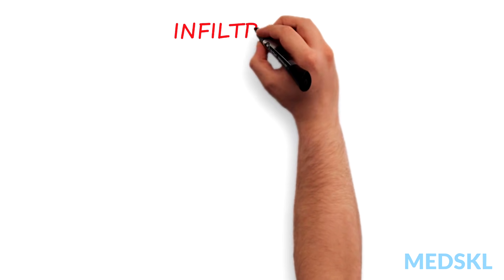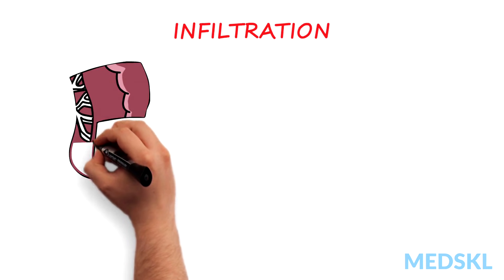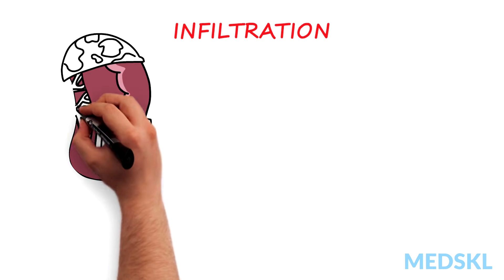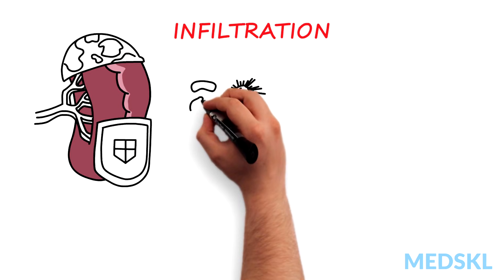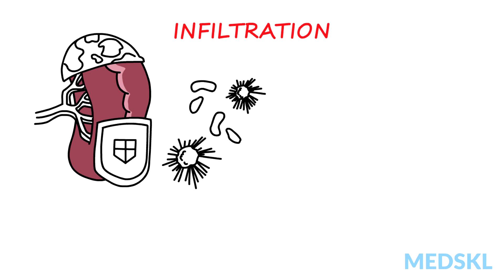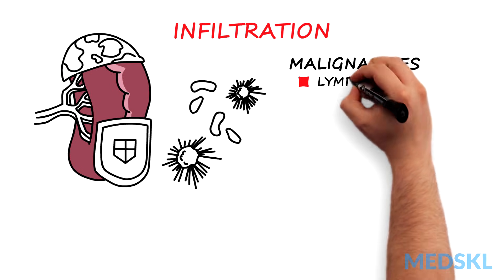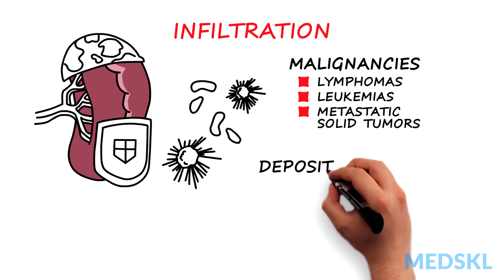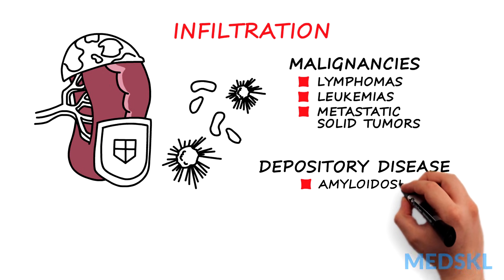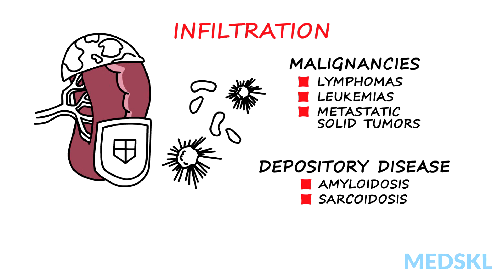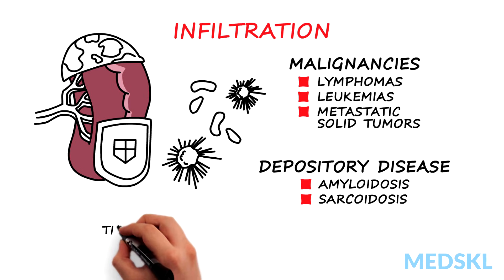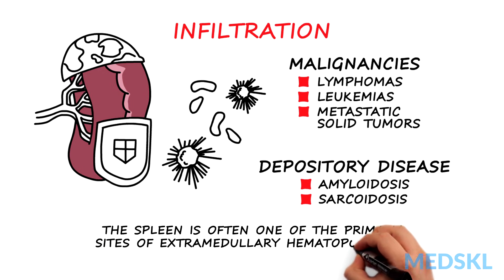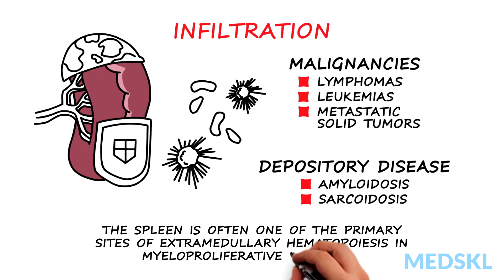Next, let's look at infiltration. The spleen is highly vascularized and plays a central role as a peripheral lymphatic organ. As such, it is prone to invasion by malignant and non-malignant causes. Malignancies include lymphomas and leukemias, as well as metastatic solid tumors. Depository diseases such as amyloidosis and sarcoidosis will likely manifest in other organs as well. Also, the spleen is often one of the primary sites of extramedullary hematopoiesis in myeloproliferative disorders.